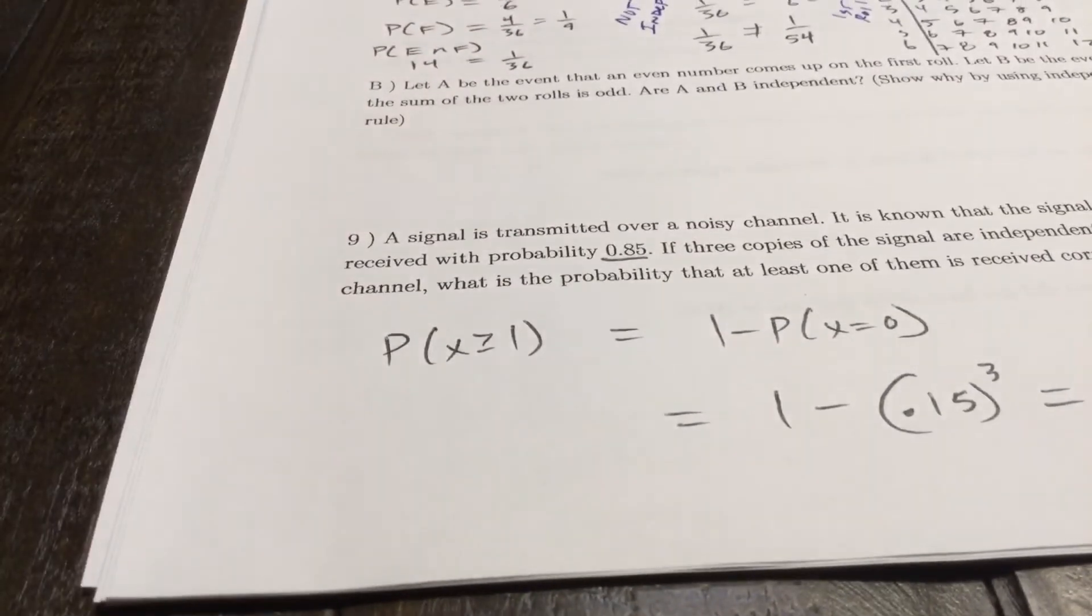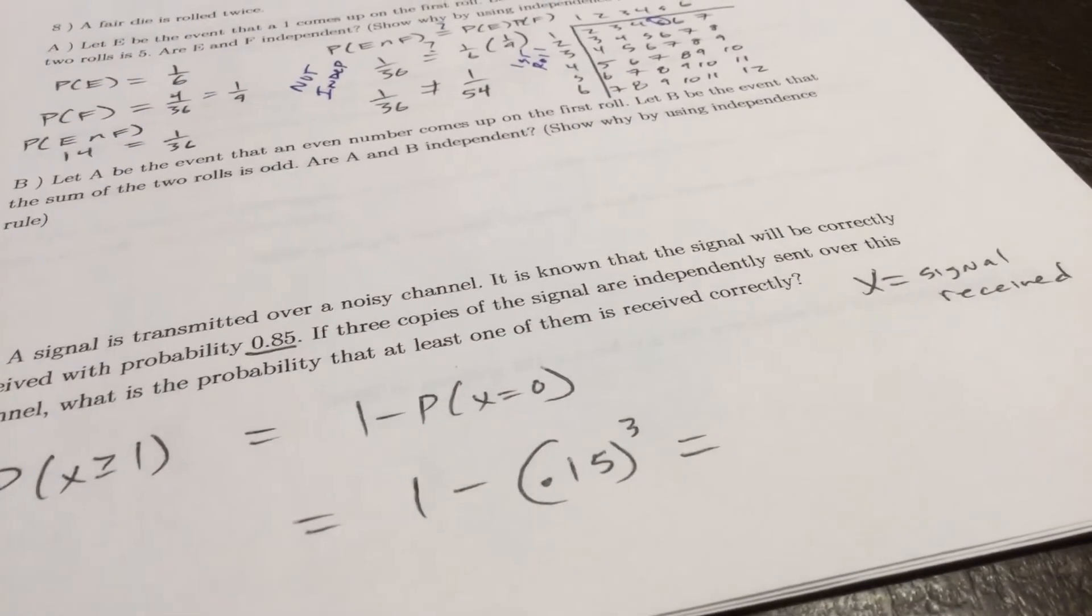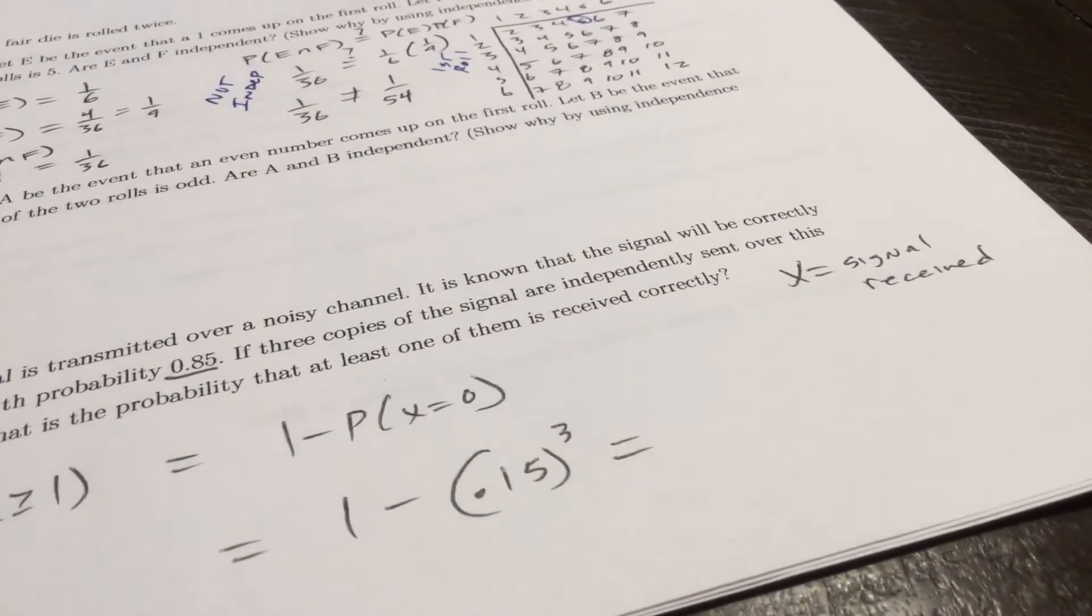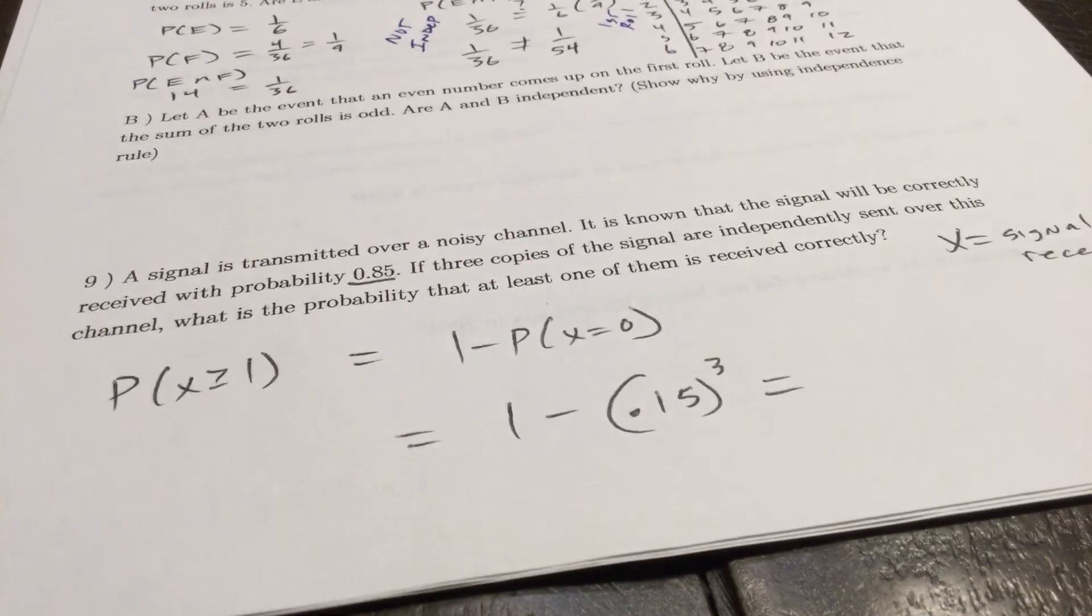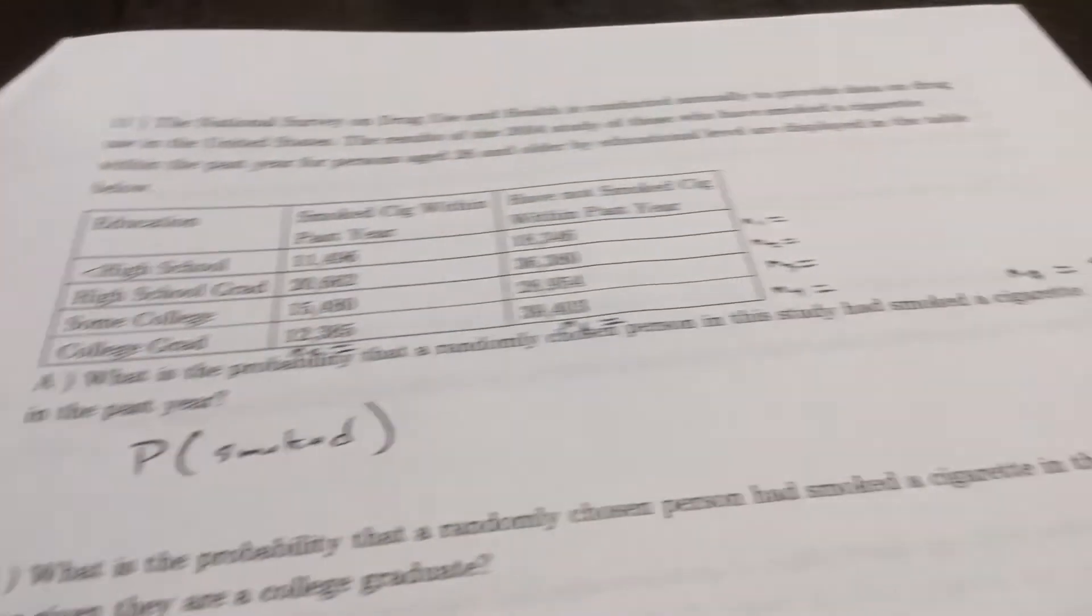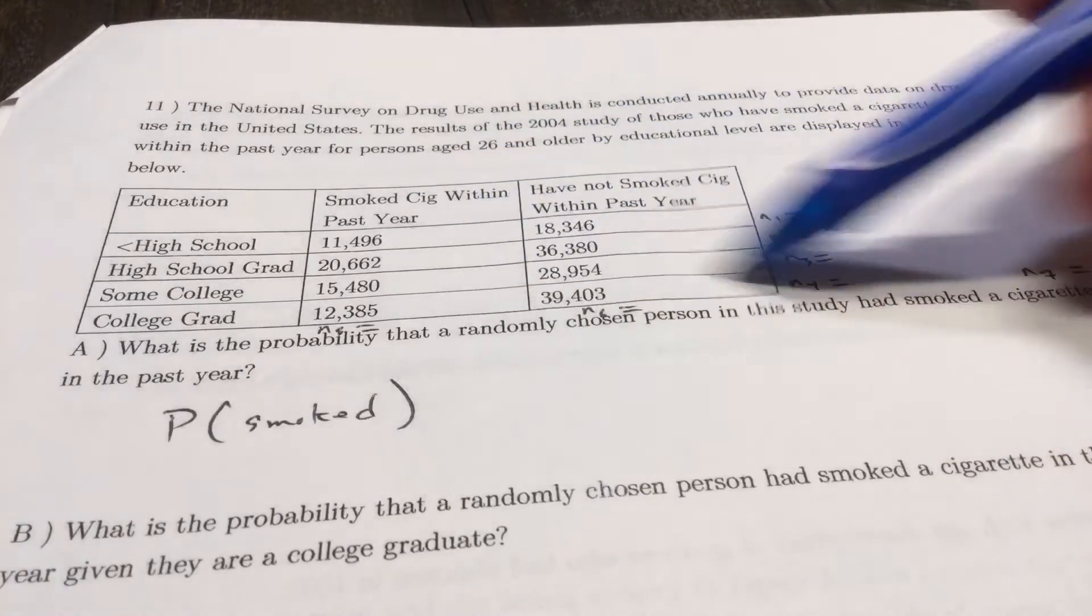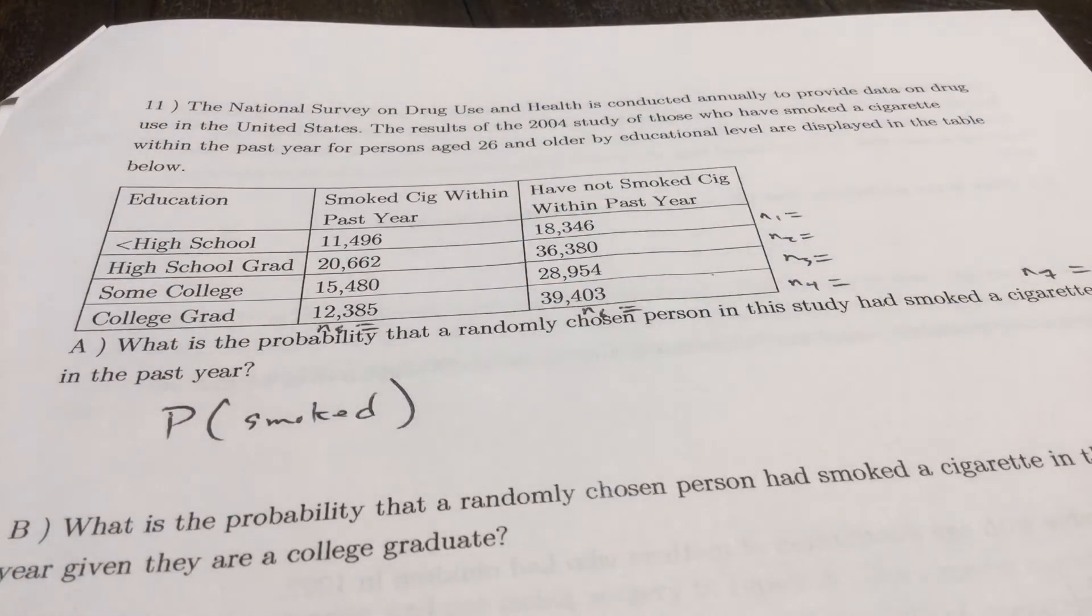We'll talk more about those. A signal is transmitted over a noisy channel. It's known that the signal will be correctly received with probability 0.85. If three copies are sent independently, what is the probability at least one of them is received? We need one of the same signals received, so X is a received signal. I want the probability that X is greater than or equal to one, which is one minus the probability that X is zero. It doesn't matter if one, two, or three are received. We just need one of them. So one minus the probability that it's not received three straight times.